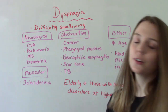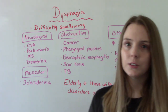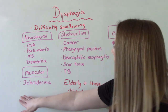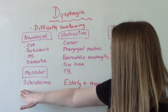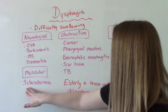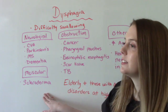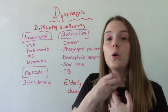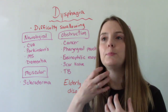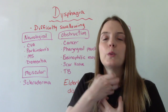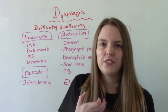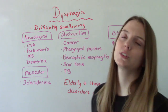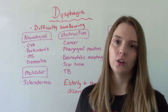But there are other causes as well. Something could be muscular — a muscular disorder called scleroderma. This is when the throat and the esophagus becomes very rigid and stiff, which makes swallowing more difficult.